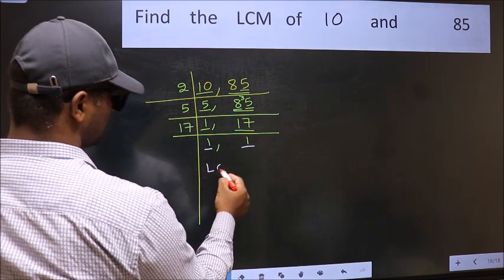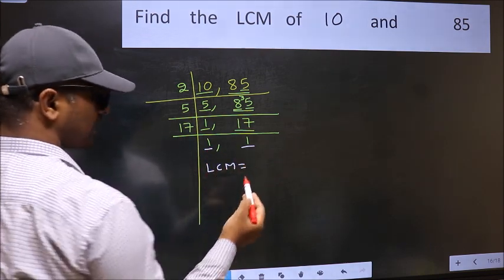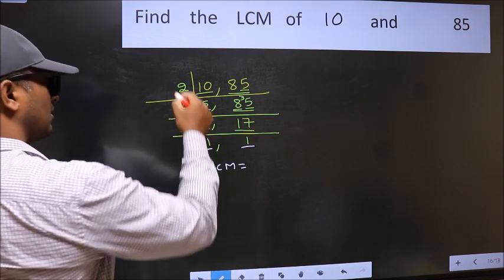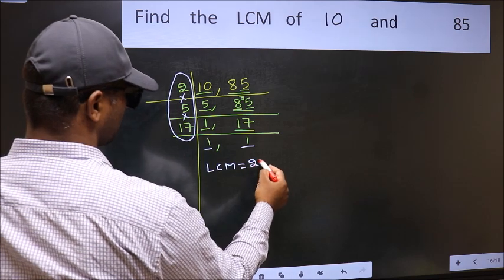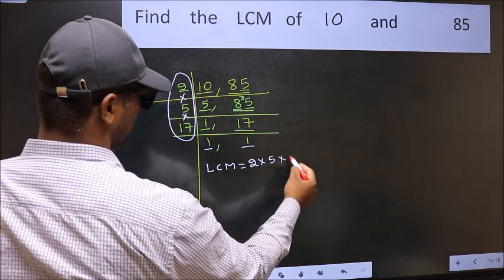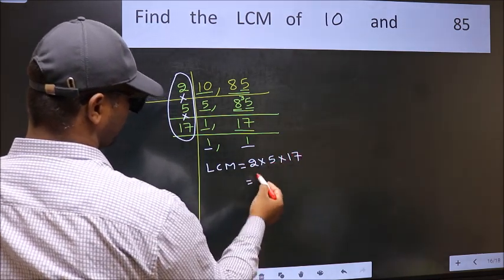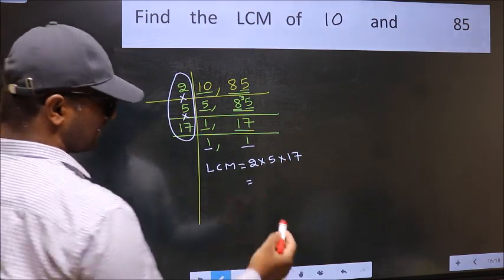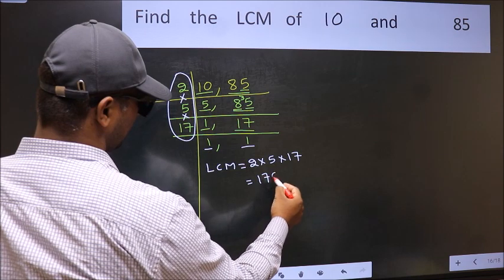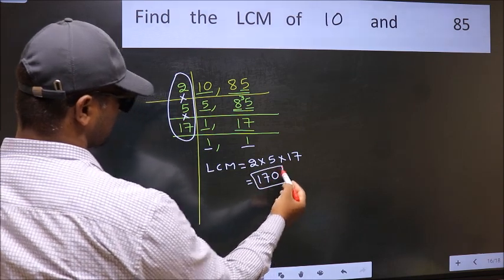So our LCM is the product of these numbers. That is 2 into 5 into 17. When we multiply these numbers, we get 170 as our LCM.